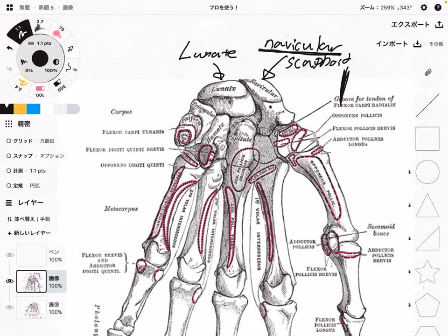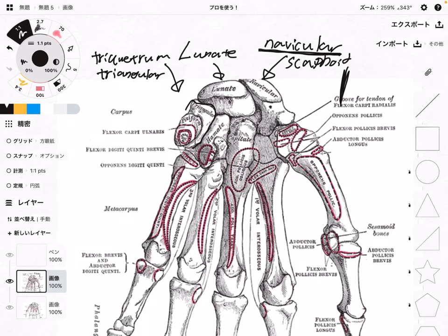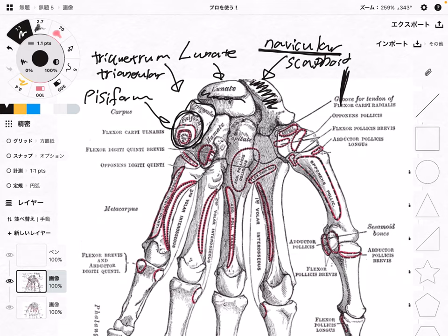Next to the lunate, this bone is the triquetrum. Some anatomy books call this bone the triangular bone — it doesn't matter, either way. On top of the triquetrum is the pisiform — this tiny one. So those are the four bones of the proximal row: navicular or scaphoid, lunate, triquetrum or triangular, and pisiform.